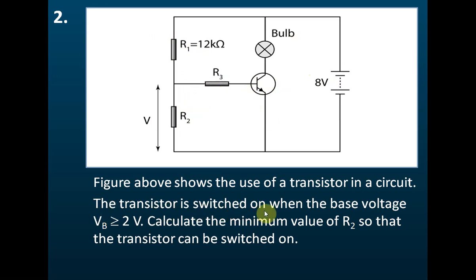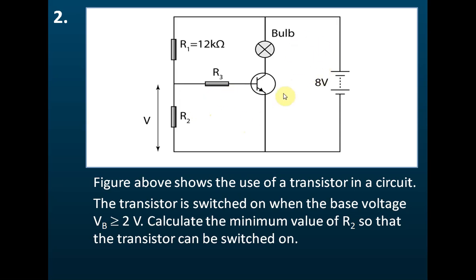The transistor is switched on when the base voltage is greater than two volts. So if the voltage across the base and the emitter is greater than two volts, current can flow in the collector circuit. If it's less than two volts, current can only flow in the base circuit but not in the collector circuit. The collector circuit is controlled by the base circuit — if there is current in the base circuit, there is current in the collector circuit.